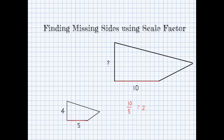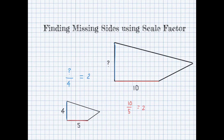Now that we have found the scale factor, we can use it to find the missing side. We know that the side length of 4 corresponds with the side length of the question mark. So we can set up a similar ratio: the question mark on top and the 4 on the bottom. This creates a ratio of corresponding sides, which is the definition of scale factor. Since we solved for the scale factor before with our known sides of 10 and 5, this ratio must equal 2 because the scale factor applies to all sides of the figure. We can solve for the question mark by multiplying 2 by 4 to get 8. The missing side is 8.